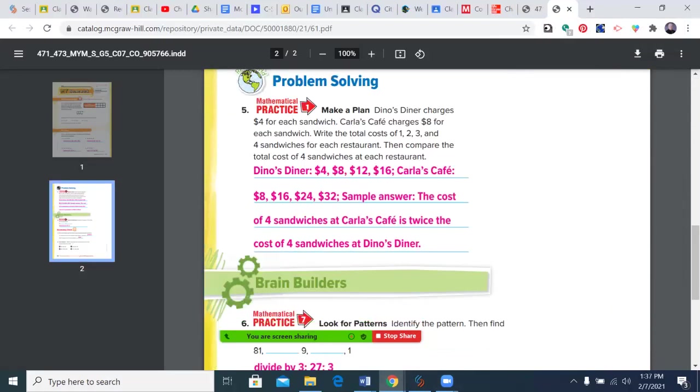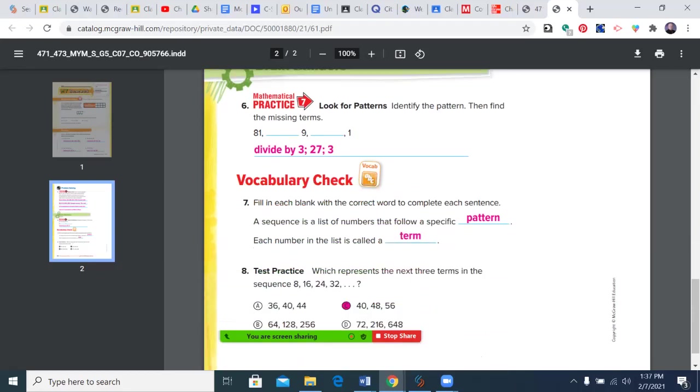In number five, we had Dino's Diner. Four sandwiches was $16, Carlos was $32. So the cost of four sandwiches at Carlos Cafe is twice the cost at Dino's, or you could say the cost of Dino's was half the cost of Carlos. Here we divided by three, so 27 and three.